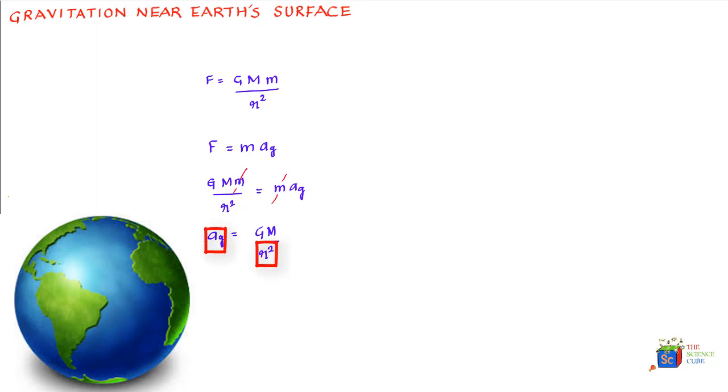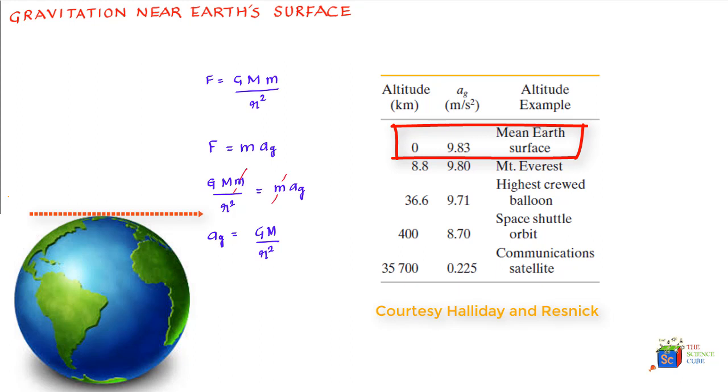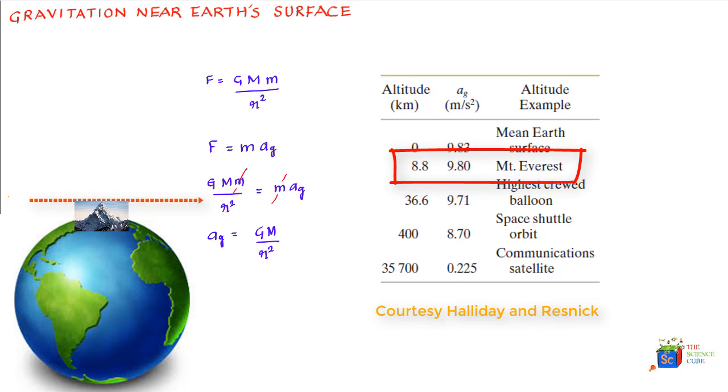If you take the varying values of r, the ag value will change as shown in this table. As the r value is changing, the ag value is also changing. On the Earth's surface, that is zero kilometers above the Earth, you find that ag is 9.83 meters per second square. If you climb up Mount Everest, the value of ag is 9.8 meters per second square at a height of 8.8 kilometers.